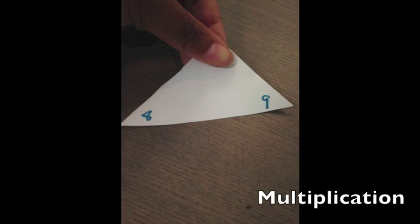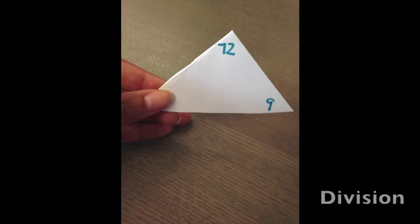To play the game, hold the card up for your learner to see and place your thumb over one of the corners, covering a number. Your learner should identify the number that is covered by recognizing the other uncovered numbers as part of the multiplication or division fact.